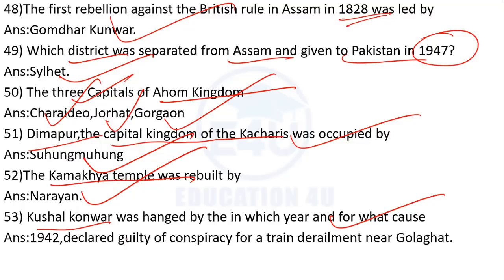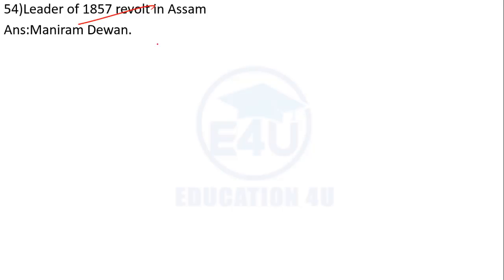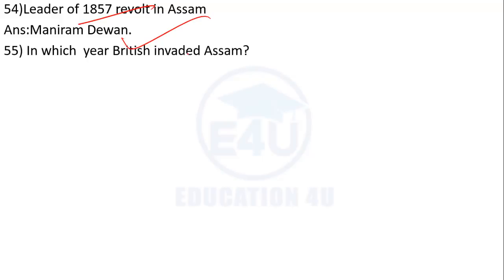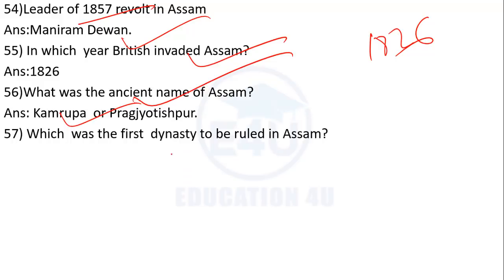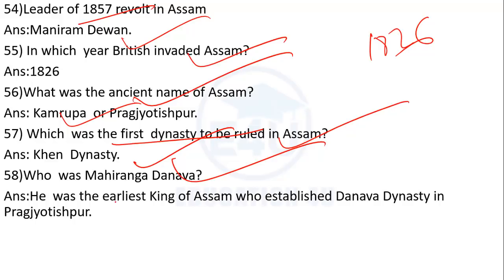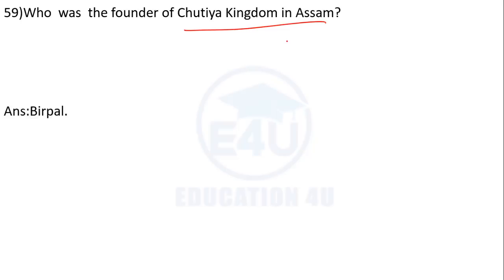Kushal Konwar was hanged — in which year and for what cause was Kushal Konwar hanged? The Dhanava dynasty — who established the Dhanava dynasty? The Sutiya kingdom founder — who was the founder of Sutiya kingdom? The answer is Birpal.